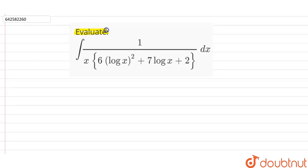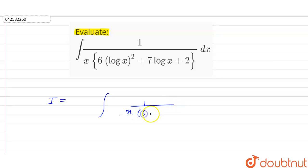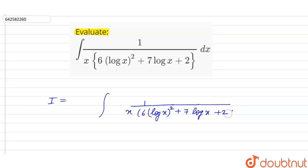So we have to evaluate the given integral. Let this integral be I, so I is equal to 1 upon x times 6 log x whole square, plus 7 log x, plus 2, with respect to dx.